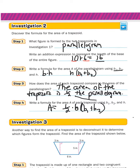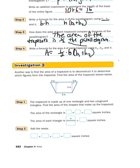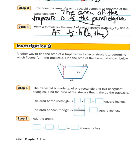By going through all of that, that is where the formula for area of a trapezoid comes from. Now in Investigation 3 we're going to look at a different way to find the area of a trapezoid without using that formula. Another way is to deconstruct it to determine which figures form the trapezoid. Step one says the trapezoid is made up of one rectangle and two congruent triangles. Find the area of the shapes that make up the trapezoid. If you look here, we have a rectangle, and here's one congruent triangle and here's the second congruent triangle.